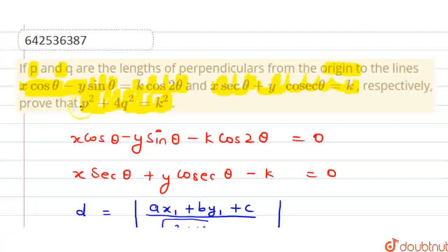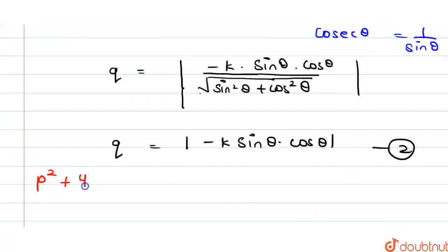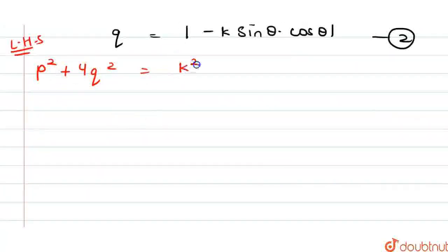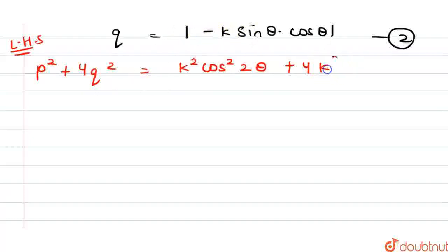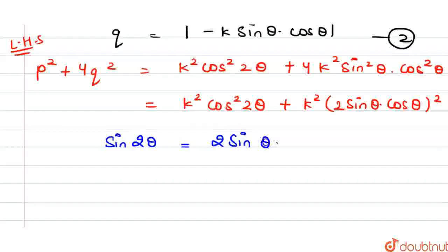We have to prove that p² plus 4q² equals k². Considering the left-hand side: p² plus 4q². We have p equals mod of minus k cos 2θ, so p² equals k² cos²2θ. And q equals mod of minus k sin θ cos θ, so 4q² equals 4k² sin²θ cos²θ, which can be written as k² times (2 sin θ cos θ)². We know that sin 2θ equals 2 sin θ cos θ.